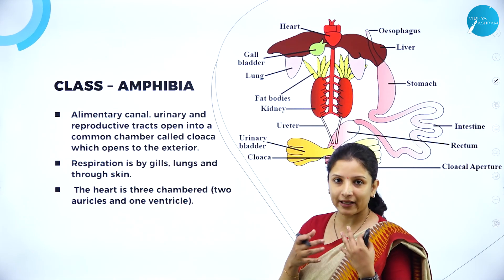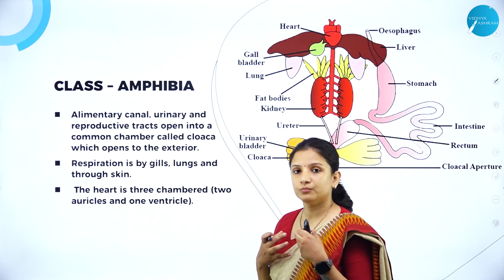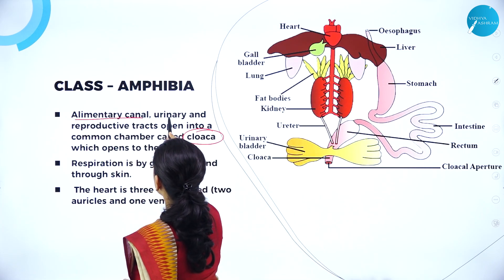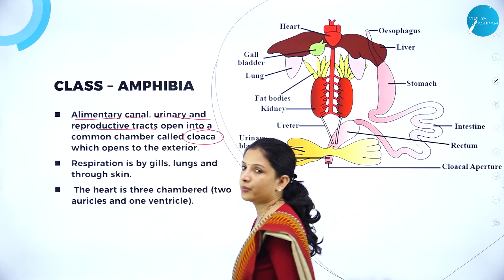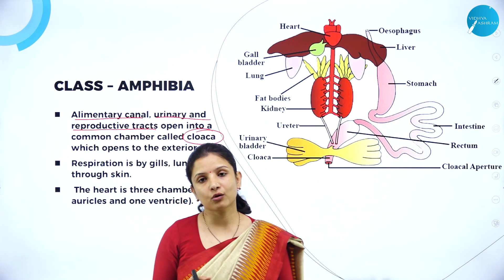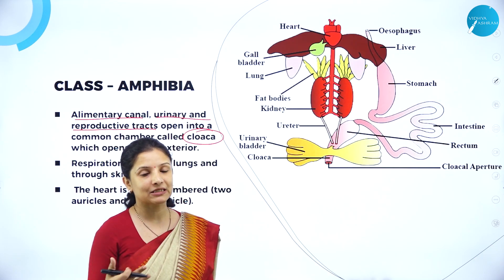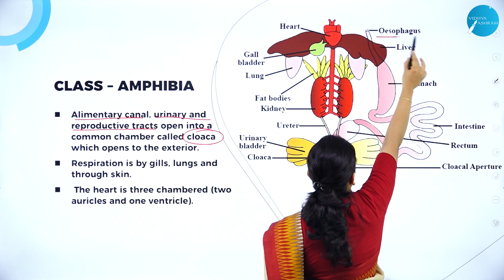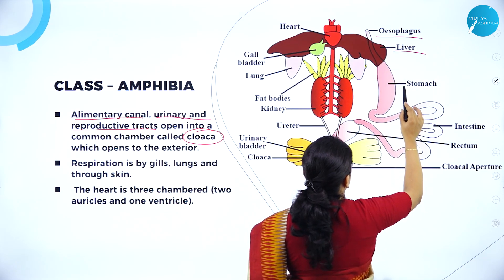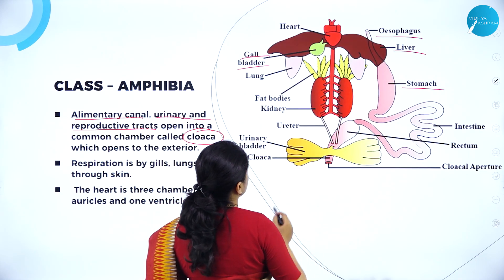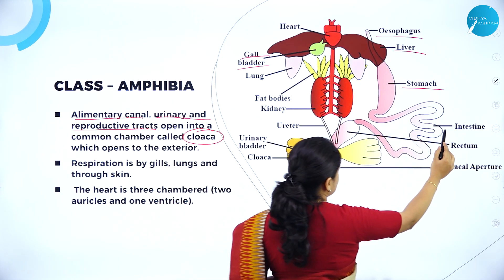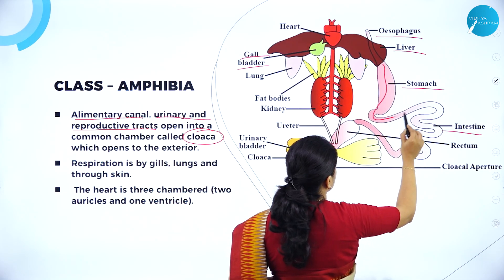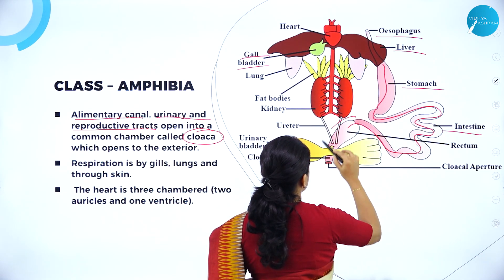Talking about their alimentary canal, they have a chamber called cloaca. It is into this cloaca that the alimentary canal, the urinary, and the reproductive tracts open into one common chamber called cloaca, and that cloaca opens to the exterior through which excretory or waste products come out. The alimentary canal has the esophagus, liver, stomach, gallbladder, and intestine, all interconnected and opening into the common chamber — the cloaca.